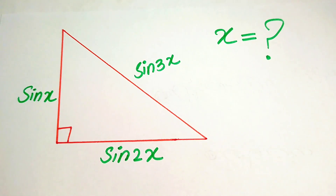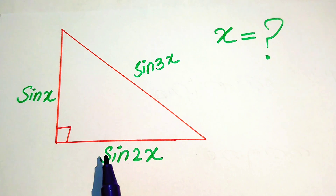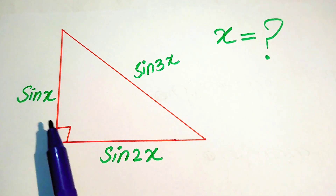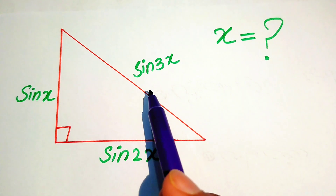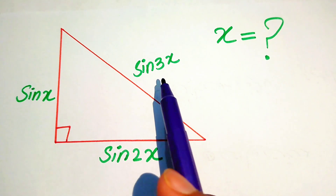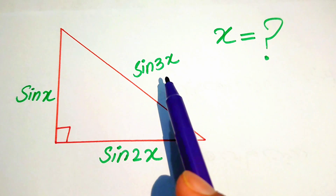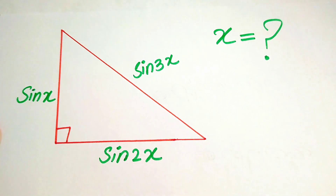Hello everyone, welcome. We will solve this geometry problem. We have a right triangle in which the lengths of its sides are sin x, sin 2x, and sin 3x respectively. In this problem we find the value of x.